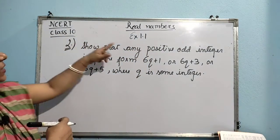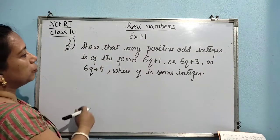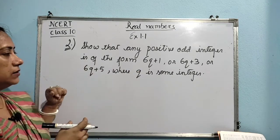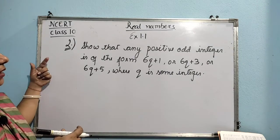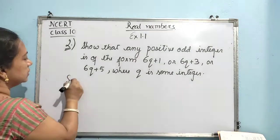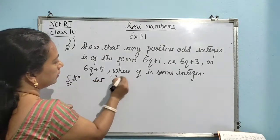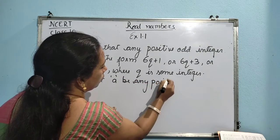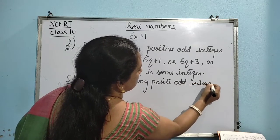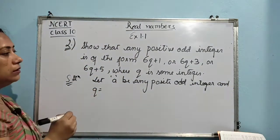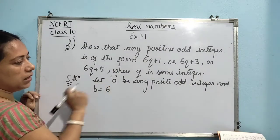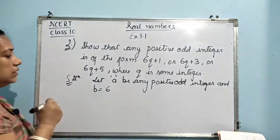The next question is from exercise 1.1, question number 2: show that any positive odd integer is of the form 6Q plus 1 or 6Q plus 3. Just like the earlier question where we had to express a positive odd integer in the form 4Q plus something, here we proceed similarly. Let A be any positive odd integer and B is equal to 6, since it is in the form 6Q plus something.